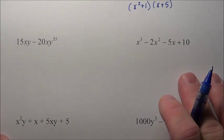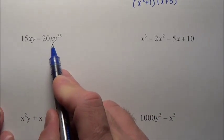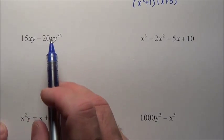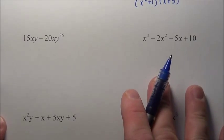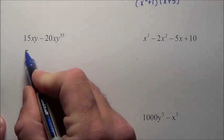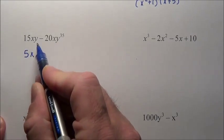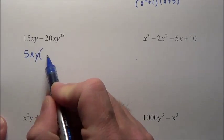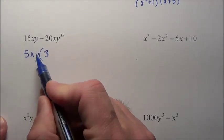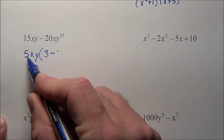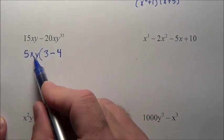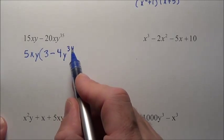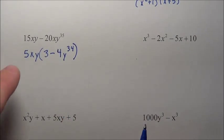The next problem is 15xy minus 20xy to the 35th. This is just basic factoring out. You have 15 and 20 — a 5 can come out. You have an x and an x, so an x can come out. He has y and y to the 35th, so a single y is the most that can come out. 5xy times 3 gives you 15xy. 5 times 4 gives you the 20, and we're left behind with y to the 34th, because y times y to the 34th gives y to the 35th. So it factors to 5xy times 3 minus 4y to the 34th.